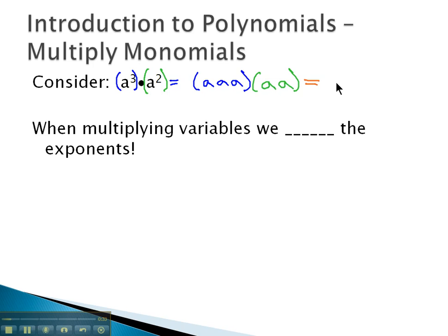So with all this multiplication together in one step, how many a's are multiplied? 1, 2, 3, 4, 5. We have 5 a's multiplied together, which we can write as a to the 5th.